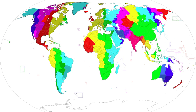As daylight saving time, Northern Hemisphere summer only. Principal cities: Berlin, Vienna, Rome, Paris. Europe: Albania, Andorra, Austria, Belgium, Bosnia and Herzegovina, Croatia, Czech Republic, Denmark, France, Germany, Gibraltar, Hungary, Italy, Liechtenstein, Luxembourg, Macedonia, Malta, Monaco, Montenegro, Netherlands, Norway, Poland, Serbia, Kosovo, Slovakia, Slovenia, Spain, Sweden, Switzerland, Vatican City.